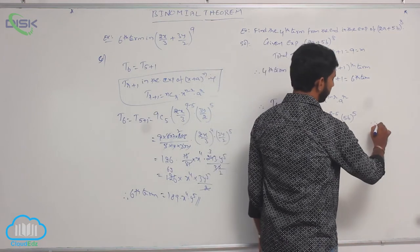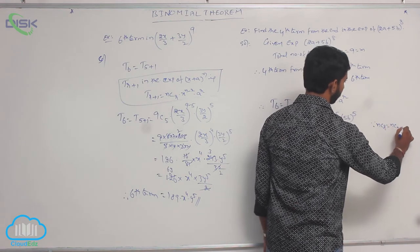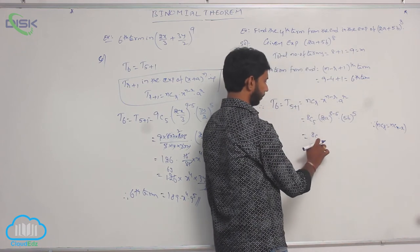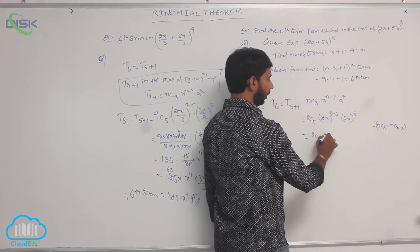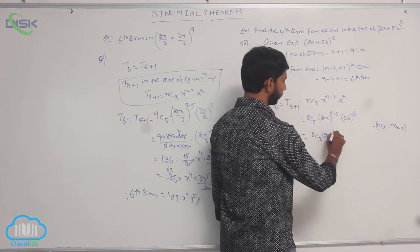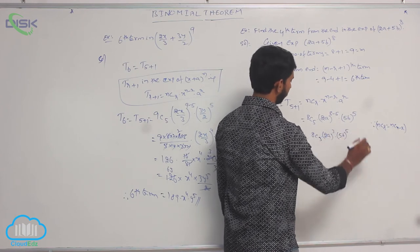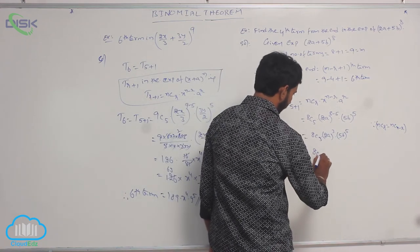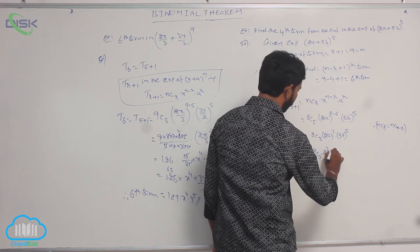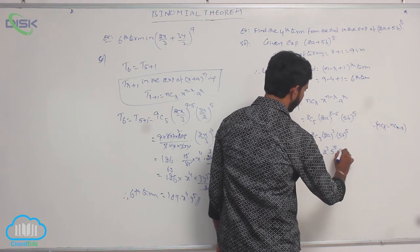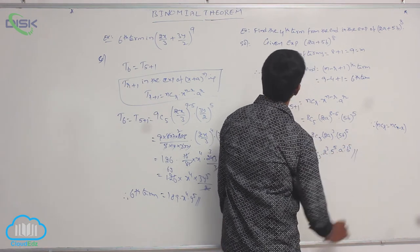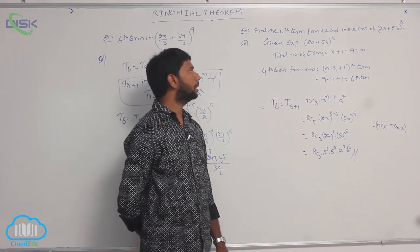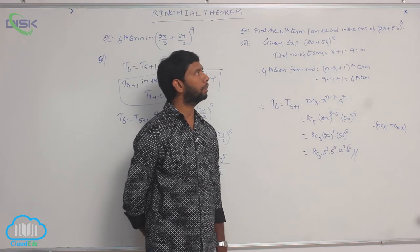So T6 = 8C3 · (2a)^3 · (5b)^5 = 8C3 · 2³ · 5⁵ · a³ · b⁵. This is the fourth term from the end in the expansion of (2a + 5b)^8.